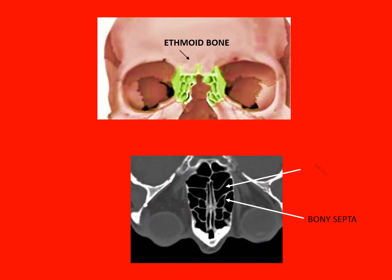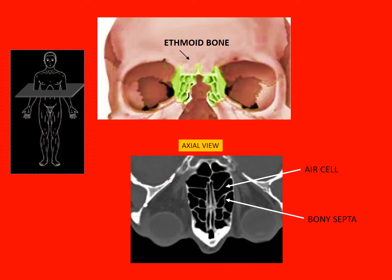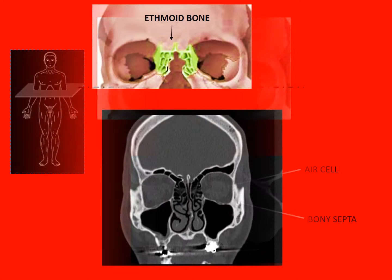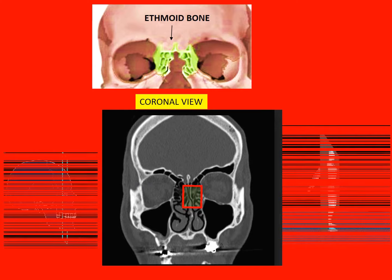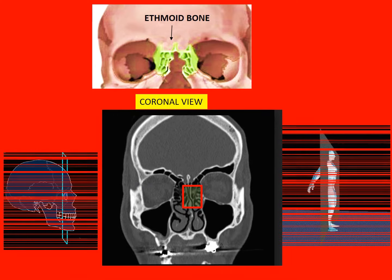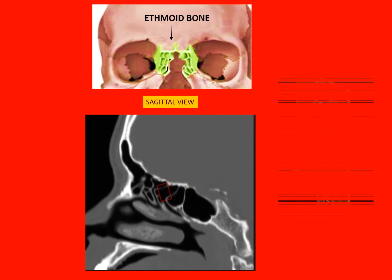The ethmoid bone is divided by bony septa to form air cells. Their appearance on a CT scan in the different planes is shown here. This is the axial or horizontal view, the coronal view, and the sagittal view.